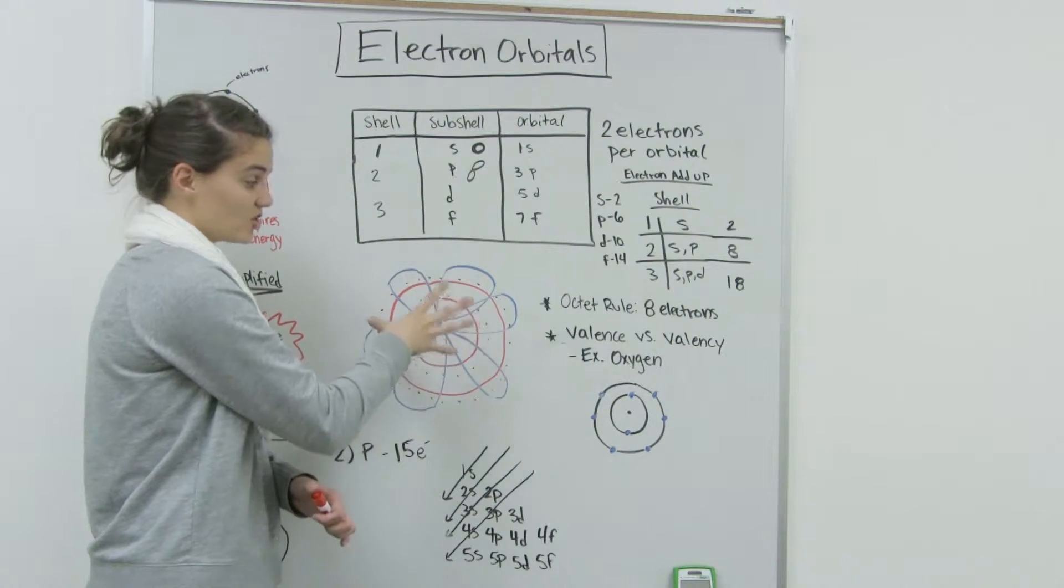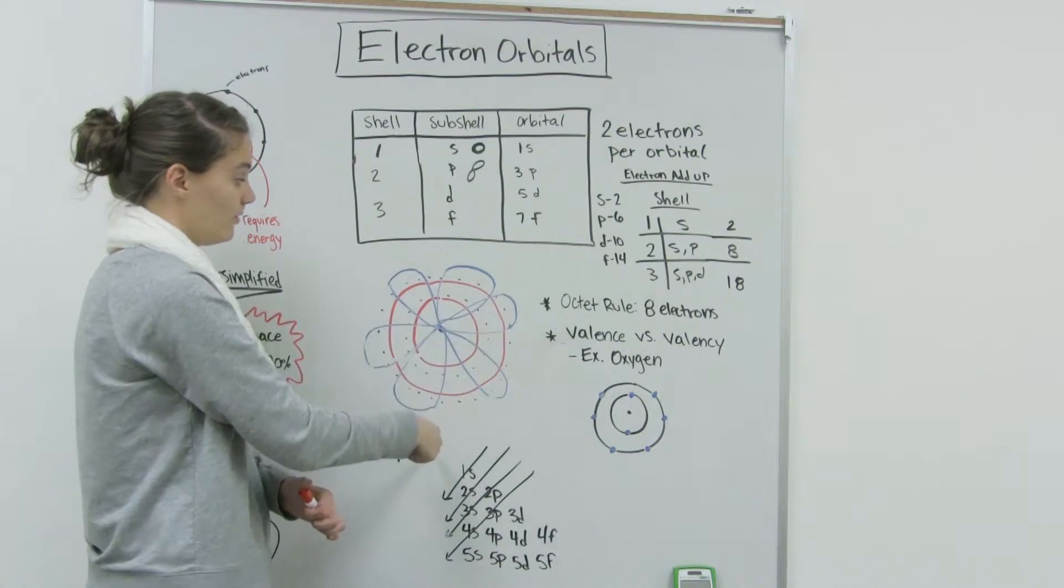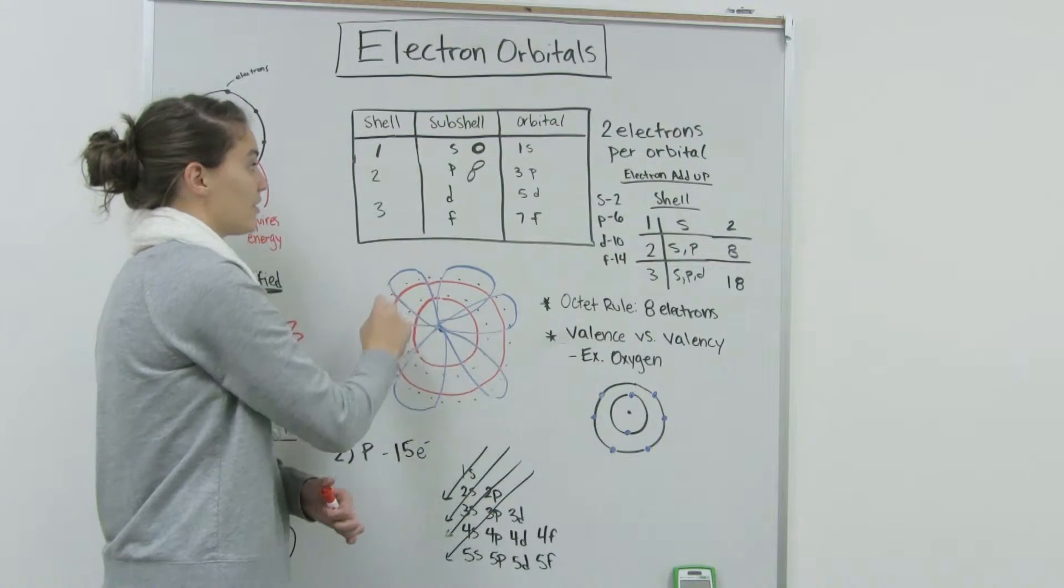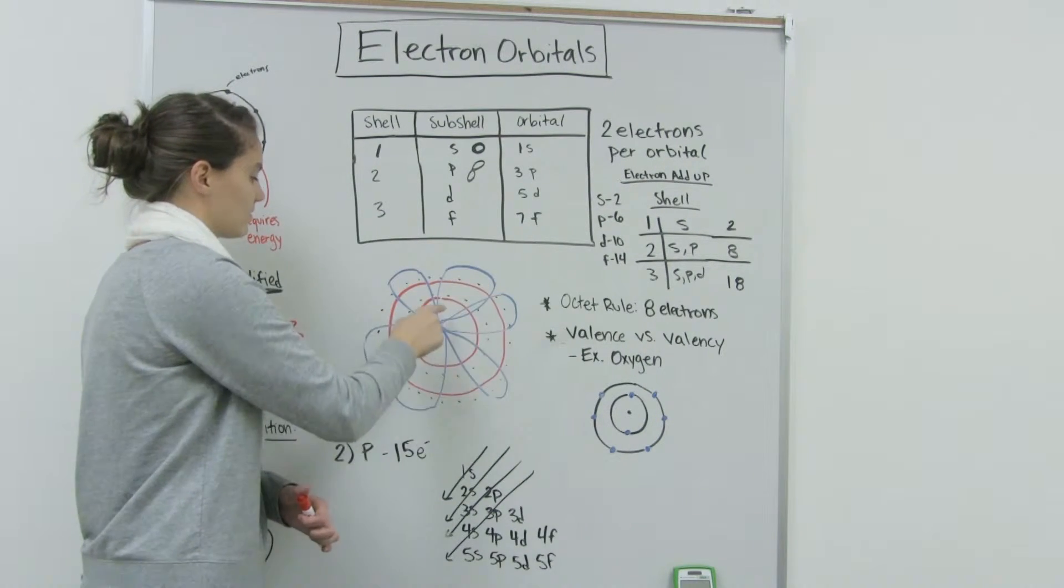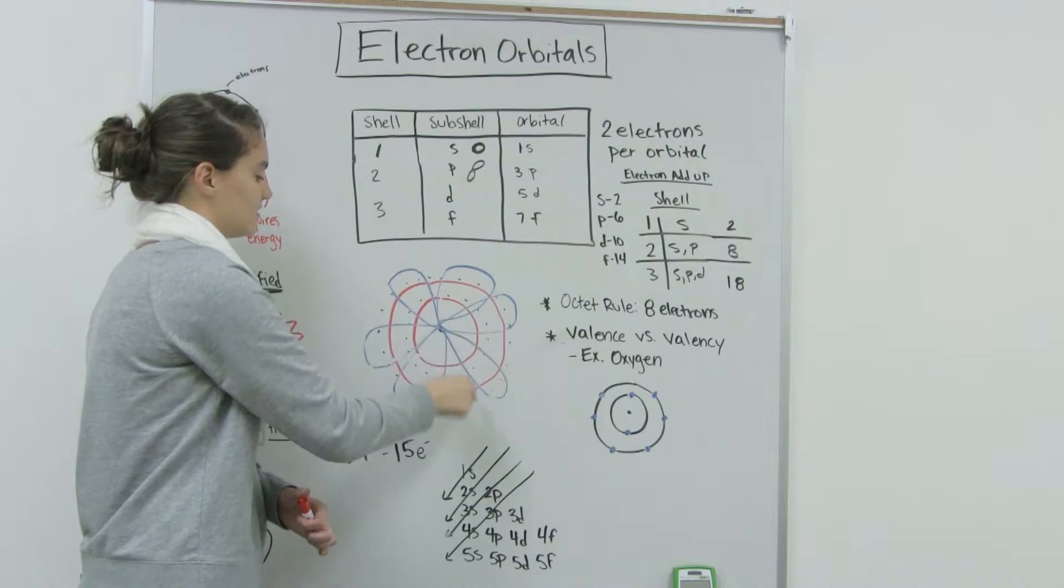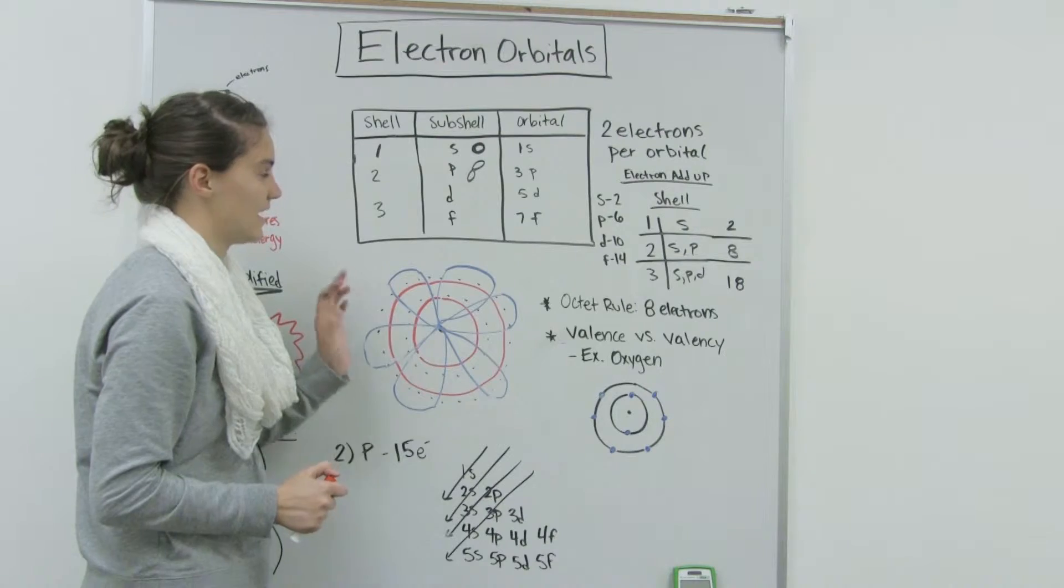And then in the second shell, we have one S subshell, or one S orbital, and then we have three P orbitals. So here's one. They make a dumbbell shape. And there's the third one. And so that's where the electrons are going to be 90% of that time.